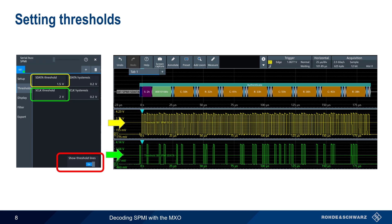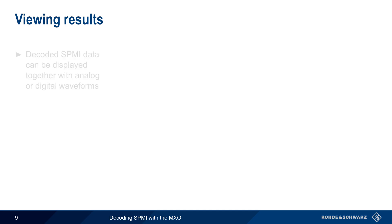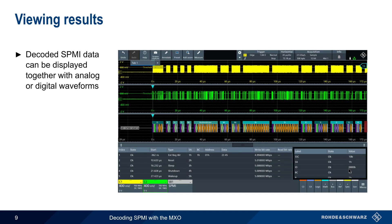A hysteresis value can also be configured independently for each of these thresholds. After parameters have been configured and acquisition started, the decoded SPMI frames are shown on the screen, along with the analog or digital waveforms. Here we see the analog serial data and serial clock signals, as well as a visual representation of the serial data frames.